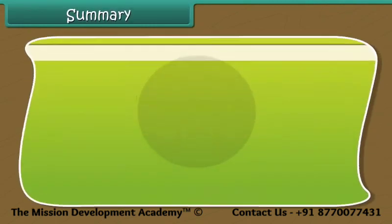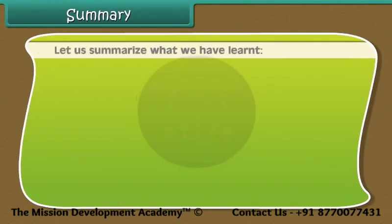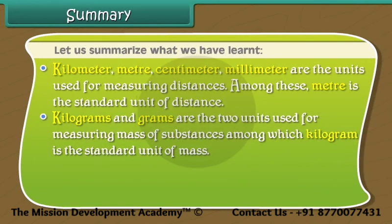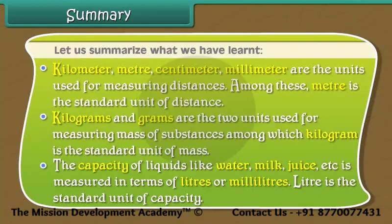Let us summarize what we have learned. Kilometer, meter, centimeter and millimeter are the units used for measuring distances, and meter is the standard unit of distance. Kilograms and grams are the two units used for measuring mass of substances, among which kilogram is the standard unit of mass. The capacity of liquids like water, milk, juice, etc. is measured in terms of liters or milliliters, and liter is the standard unit of capacity.